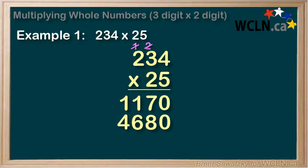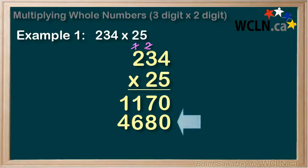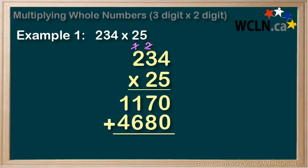At this point we have two answers. The first line is for 234 times 5. The second line is for 234 times 20. So we have the answer in two parts, and as a final step we have to add our two parts to get our final answer.